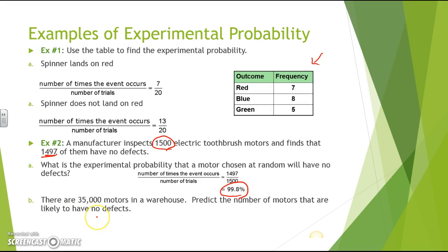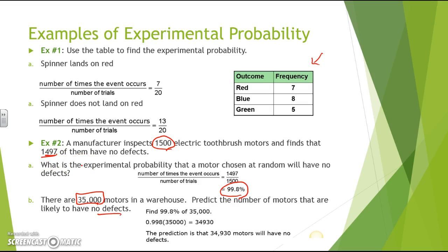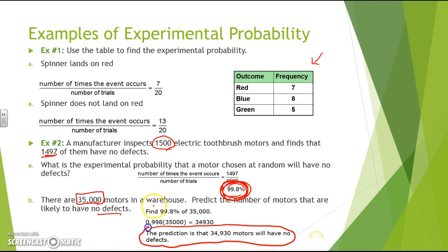There are 35,000 motors in a warehouse. To predict the number likely to have no defects, take the 99.8% found previously and multiply it by 35,000. Converting to a decimal: 0.998 × 35,000 = 34,930 motors will have no defects. So your final answer is 34,930 motors will have no defects.